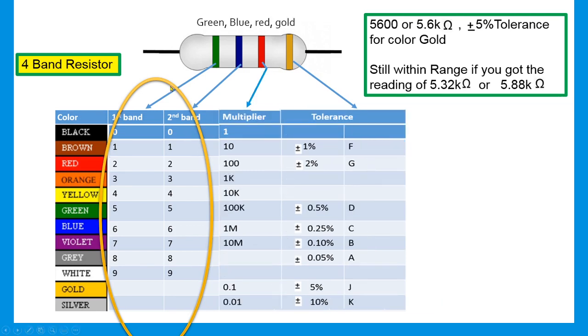In this example, we have a four-band resistor. The first band is green, which is five. The second band is blue, six. The third band, which is the multiplier, is red, which is 100. That's why I write here two zero zero.